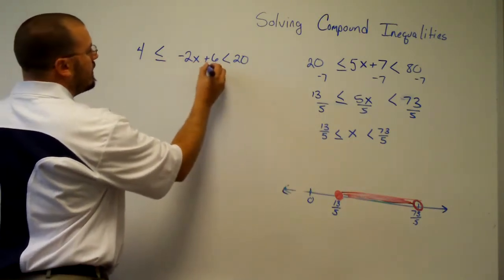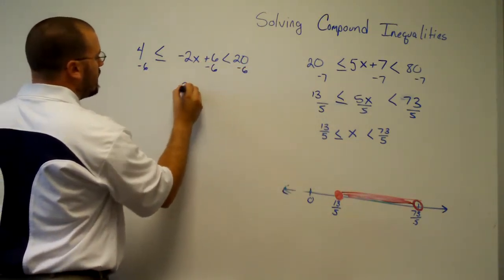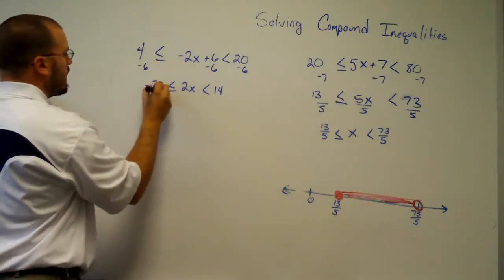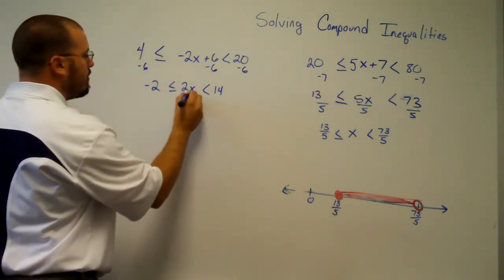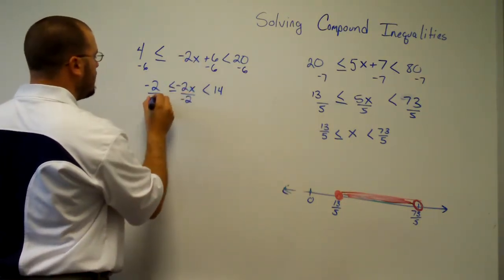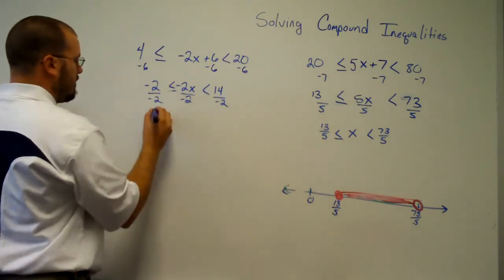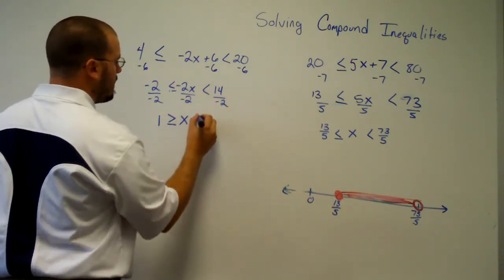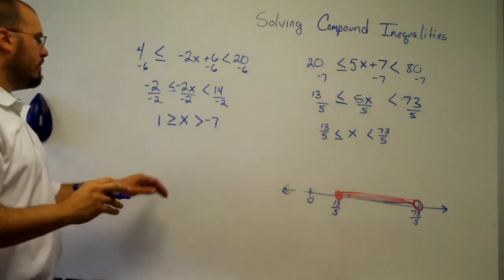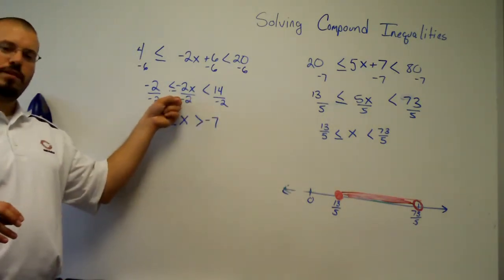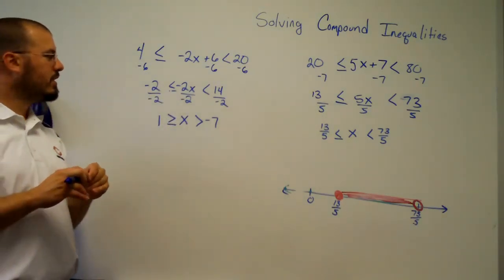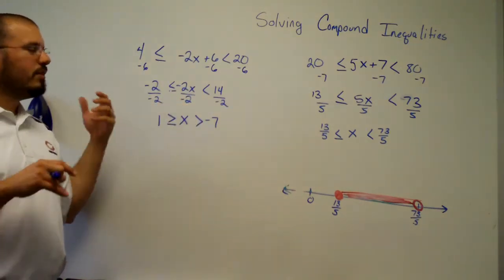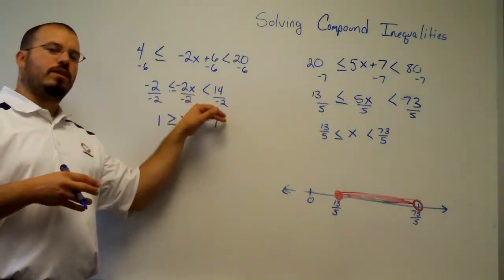The first step is to subtract 6 from all the pieces. We get 2x less than 14, and negative 2 on the other side. The next step is to divide all three parts by negative 2. When we divide by a negative, we reverse the inequality symbols — both of them. You must reverse both inequalities, not just one. So we get 1 ≥ x > negative 7, reversing both symbols.